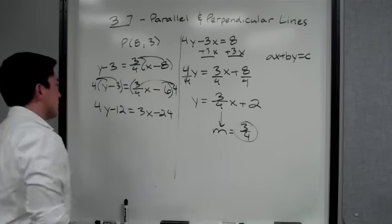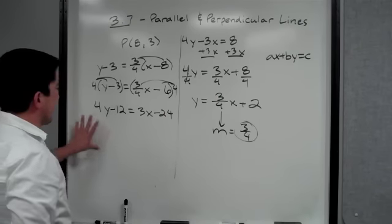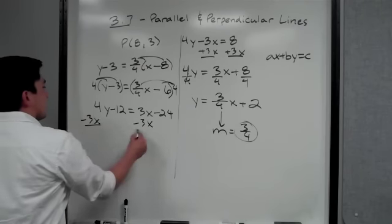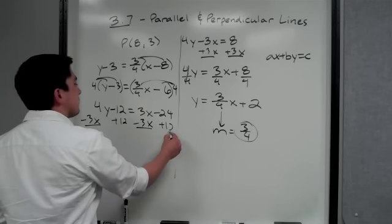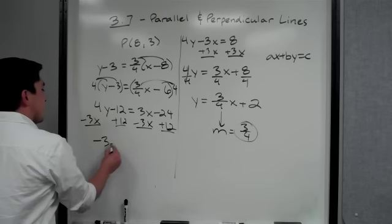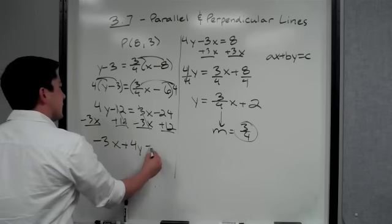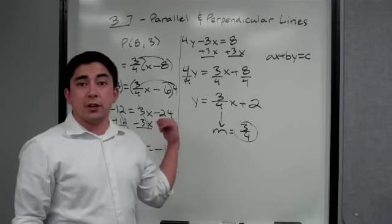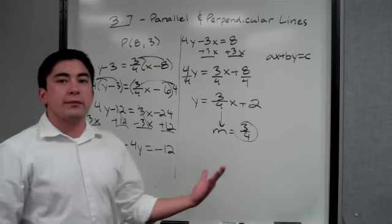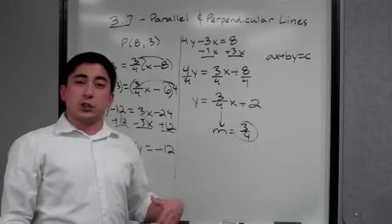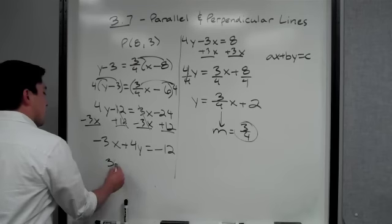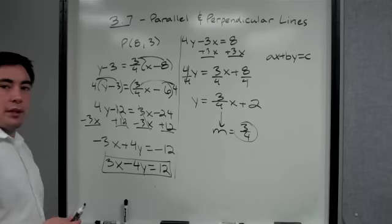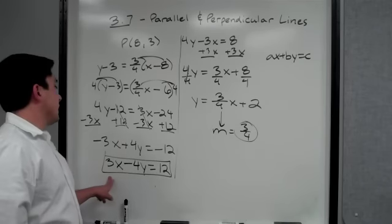Now we need it in standard form, so we move x and y to one side and everything else to the other. We subtract 3x and add 12: that gives us negative 3x plus 4y equals negative 12. But in standard form, you cannot have a negative leading coefficient for x, so we multiply everything by negative one — just change all the signs — giving us 3x minus 4y equals 12.